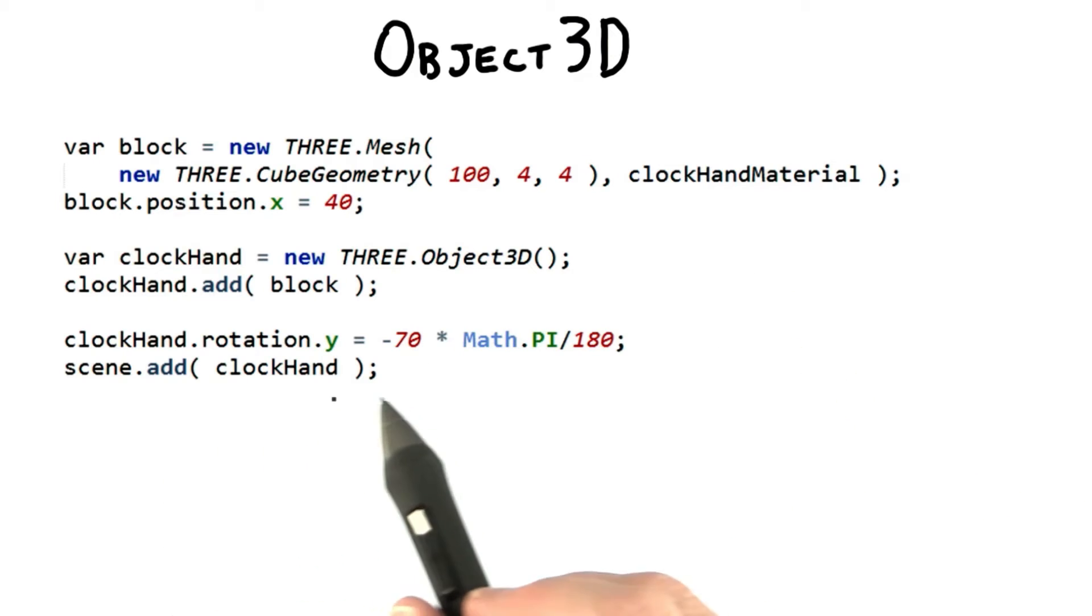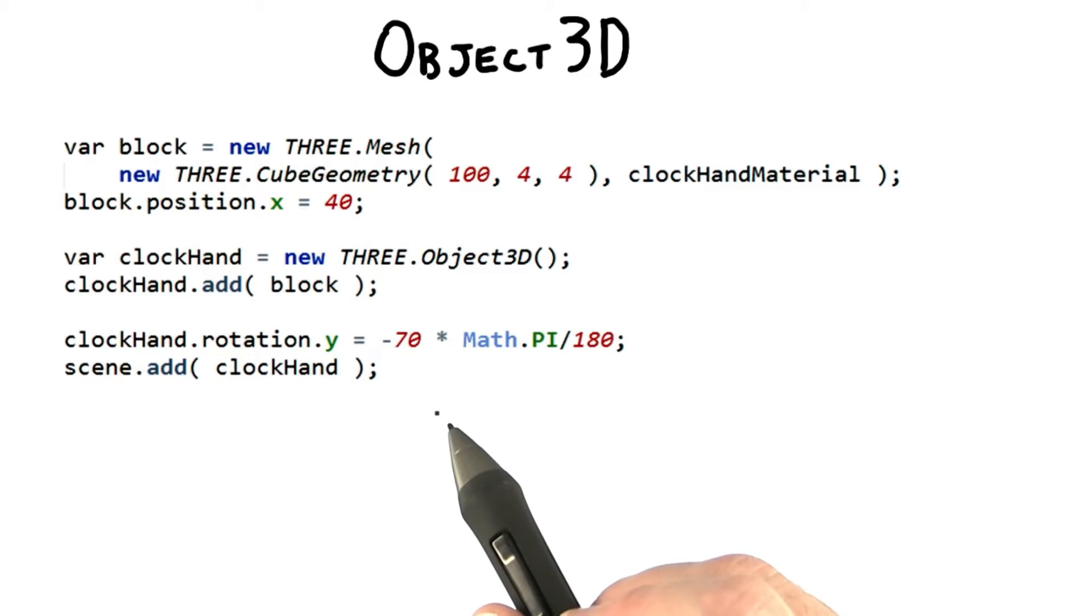The final line of code adds the clock hand object to the scene. That's one way to look at Object3D. It adds more transforms into the list that you can then use. We now have some six transforms that we could set in this system.